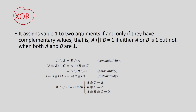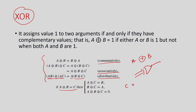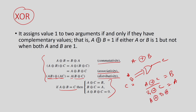XOR is represented by the symbol A⊕B. It satisfies commutativity, associativity, and distributive properties — for example A·(B⊕C) = AB⊕AC. An interesting property: if C = A⊕B, then A⊕C = B, B⊕C = A, and A⊕B⊕C = 0. You can verify these with a truth table.